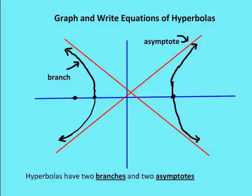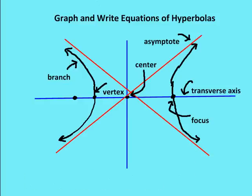The asymptotes help define the two branches of the hyperbola — they are lines that the branches get closer and closer to but never touch. That makes them different from a tangent, which touches a graph at exactly one point. The asymptotes are our framework by which we create and graph the hyperbola. We really need the two vertices and the two asymptotes, plus the transverse axis, to give a rough sketch.